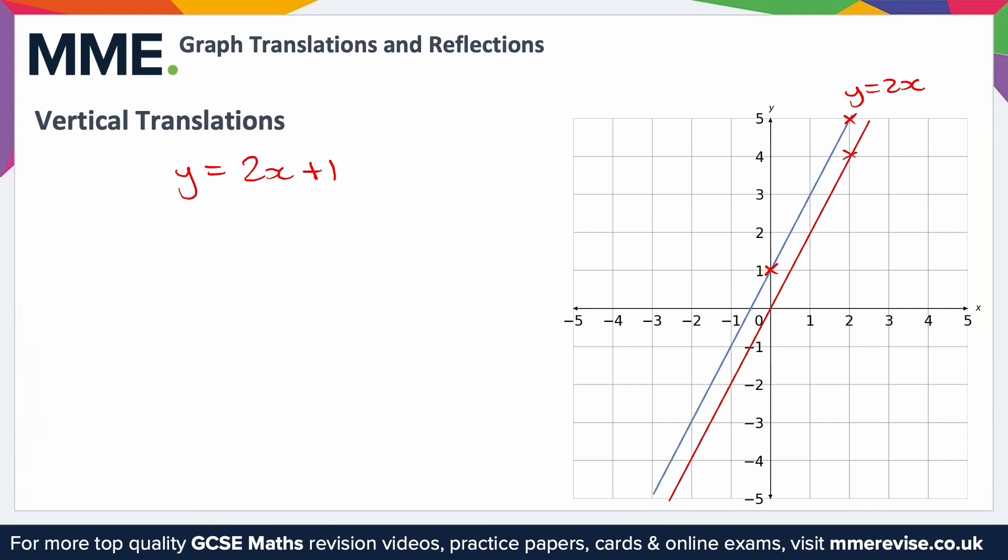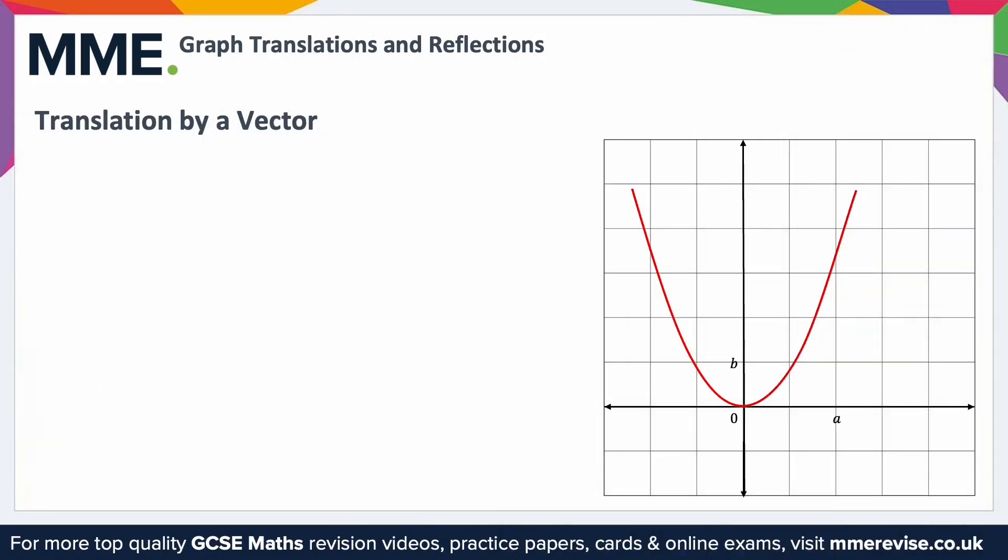We may also write a translation in the form of a vector, for example a b like this, where the graph is translated right by a units and up by b units. For example, if we wanted to translate y equals x squared as what's shown on here.